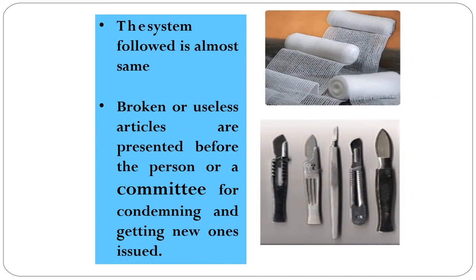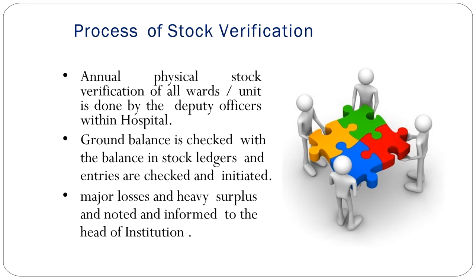The system to replace an article or equipment is largely the same across hospitals. The unit or department manager must present the item before a person or committee for condemnation and get new ones issued. Stock verification is another function under this component. It can be done annually or periodically by deputy officers authorized by the hospital authority. Ground balance is checked against stock ledgers, and major losses or heavy surpluses are noted and reported to the head of the institution.